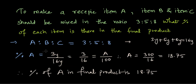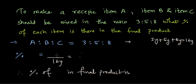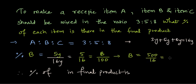Now similarly we can find parts of B. Parts of B are 5y or basically 5 by 16. So now percentage of B can be given by 5y by 16y which is 5 by 16, and then we just equate it to B by 100. And this gives me B is equal to 500 divided by 16, and that gives me 31.25, and therefore percentage of B in final product is 31.25%.